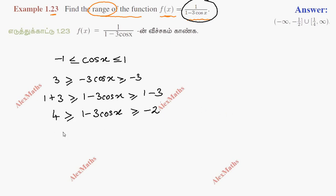This is reciprocal. Taking reciprocal: 1 over 4 less than or equal to 1 over 1 minus 3 cos x less than or equal to minus 1 over 2.